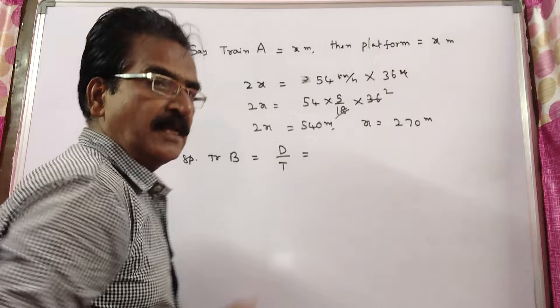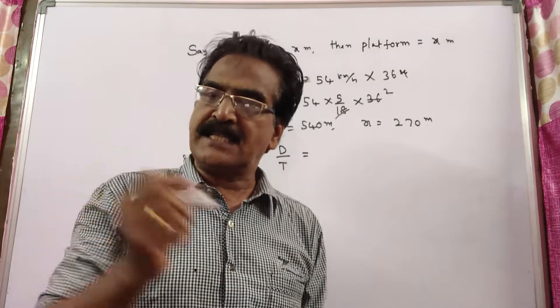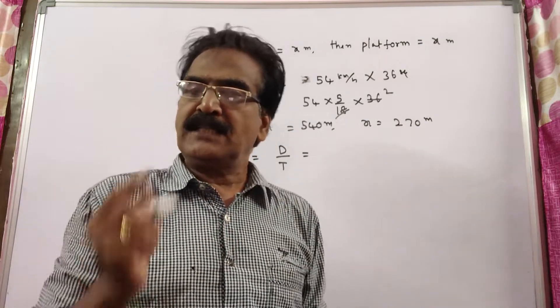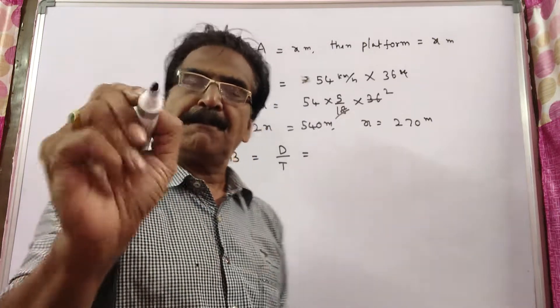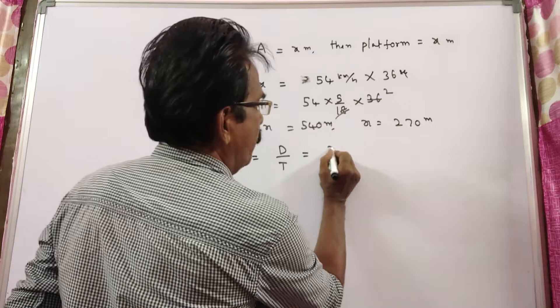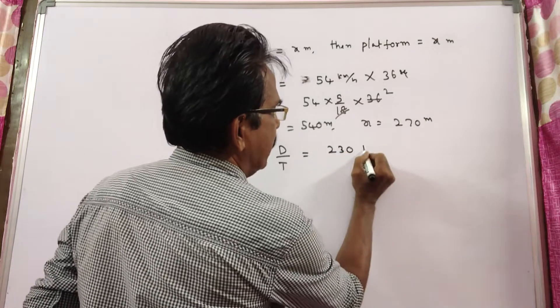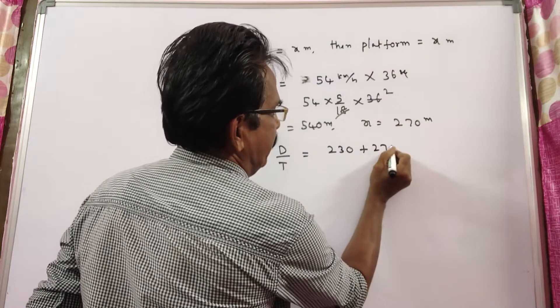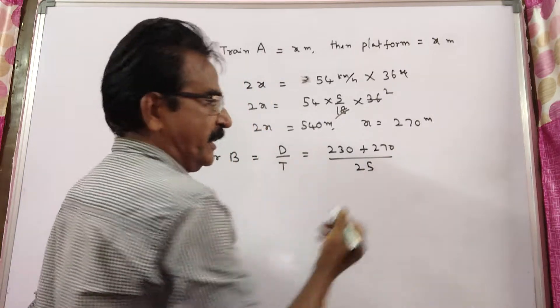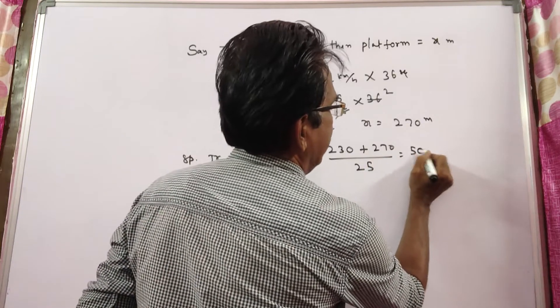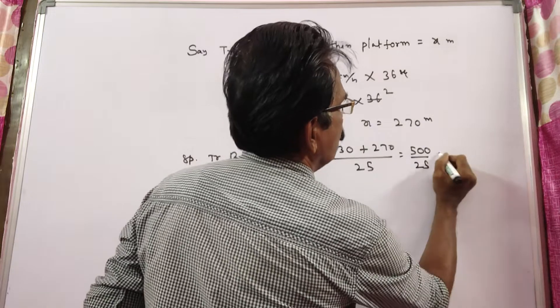Distance here means train B is crossing the same platform, so the distance means the length of train B, which is 230 meters, plus platform 270 meters, by time 25 seconds. So 500 by 25, that is equal to 20 meters per second.